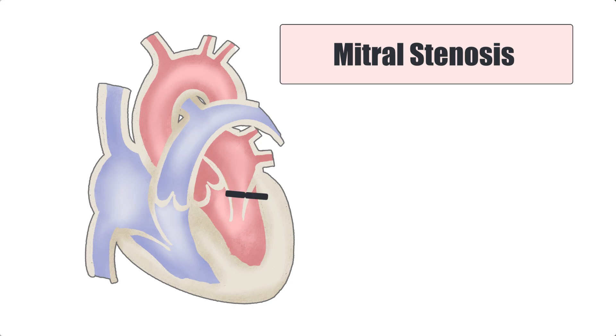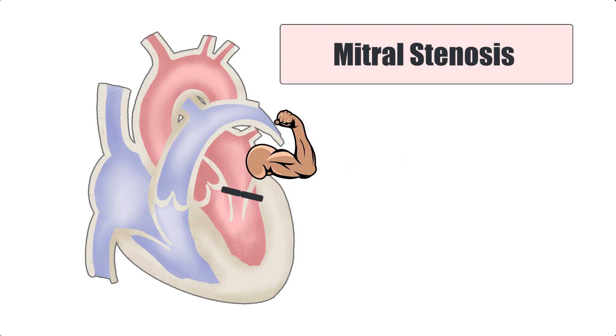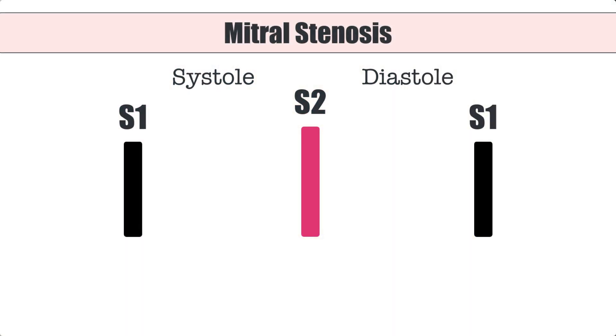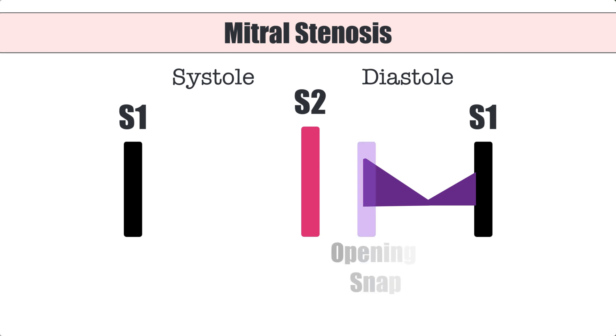Let's use the example of mitral stenosis. Mitral stenosis means that blood is having trouble getting through the mitral valve, and as a result the left atrium is going to be pumping hard every time it tries to open that door. The left atrium squeezes hard to get that door open and move blood across the valve. This happens during ventricular filling or diastole, so that turbulent blood flow leads to a diastolic murmur which happens after the mitral valve opens. It might take effort to open that door, so you might also hear an opening snap.